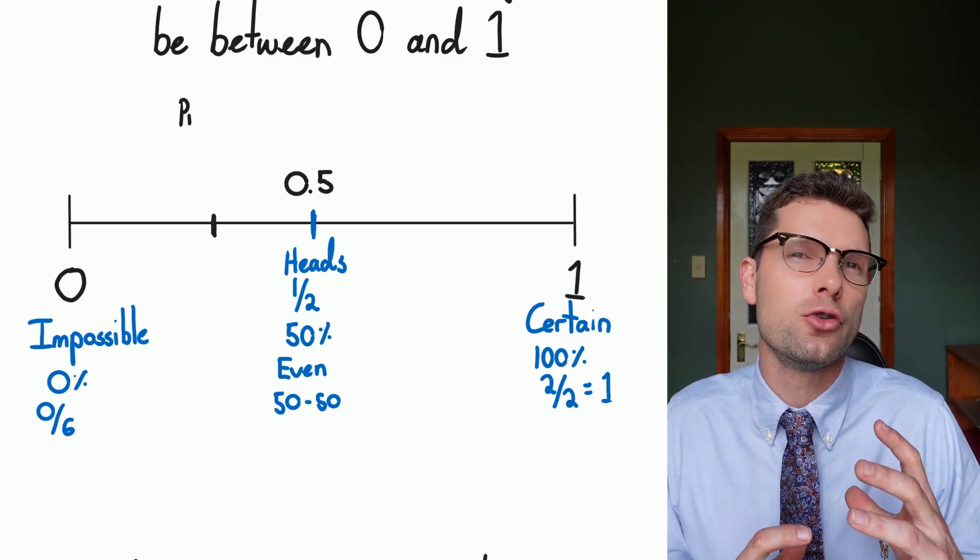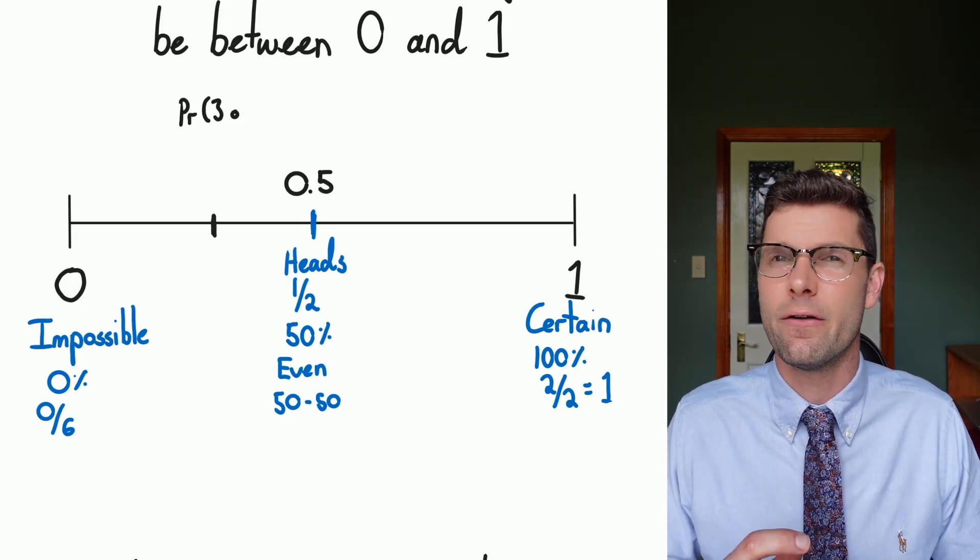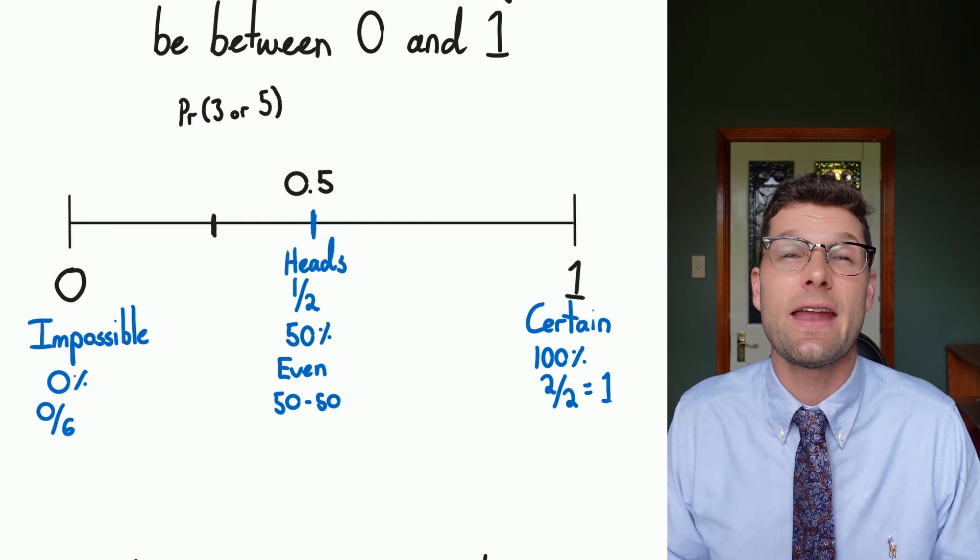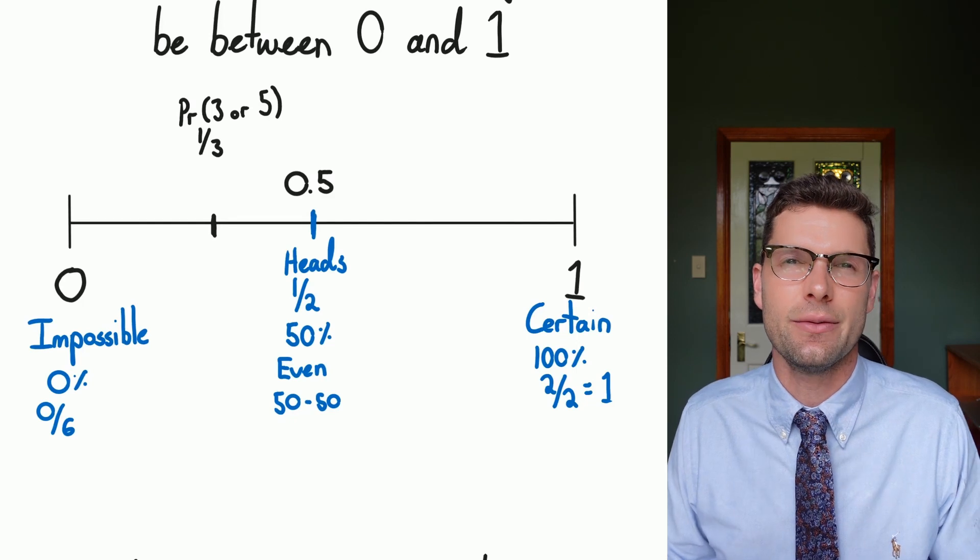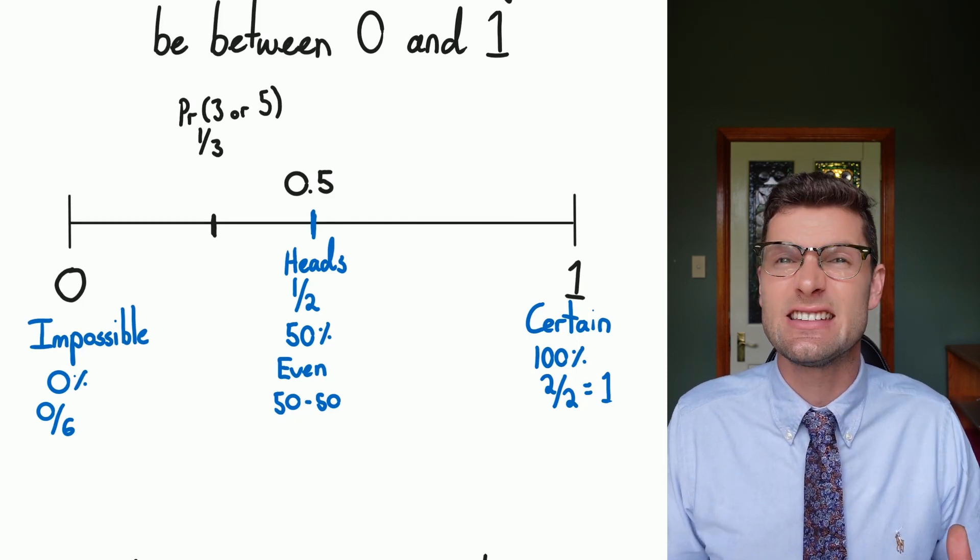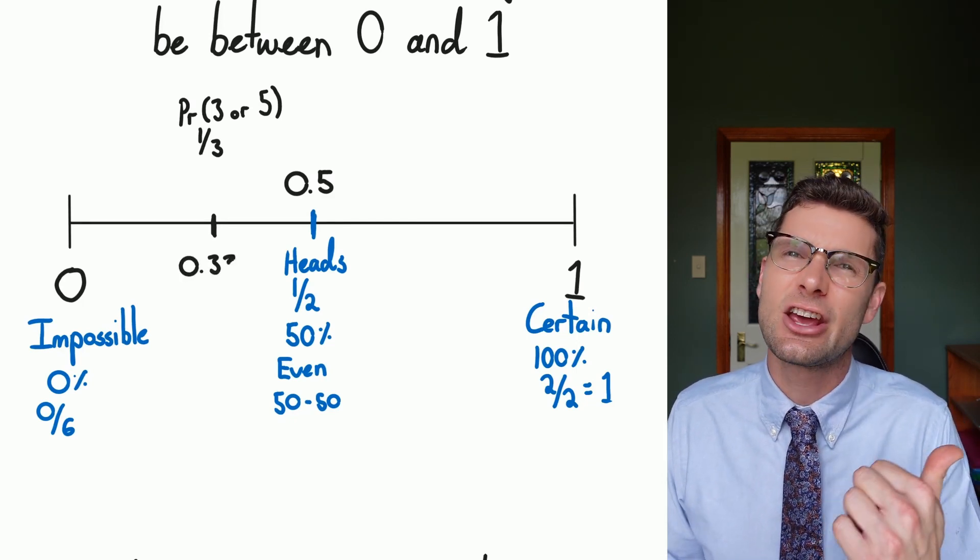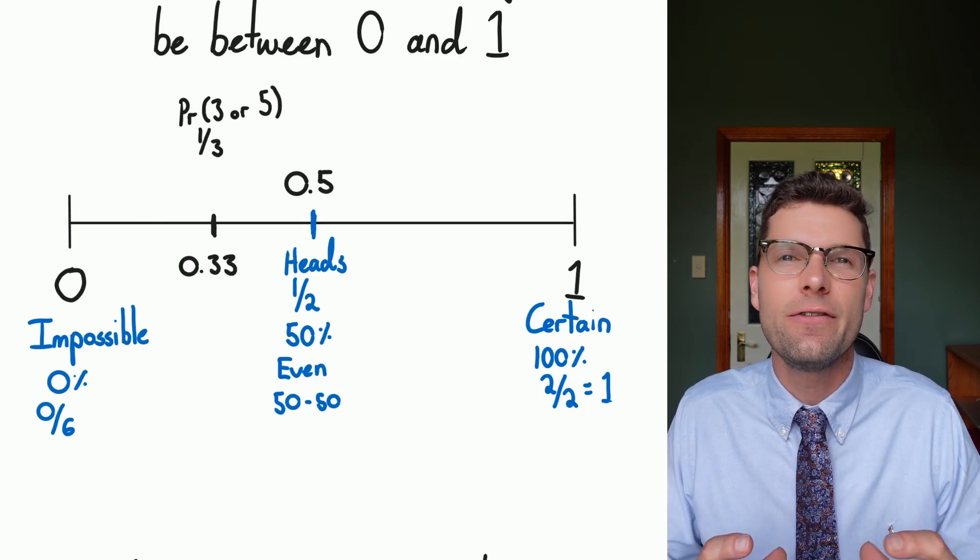So again, if we went back to that example, where you've got the probability of rolling a three or a five got you the win, we said that that would occur one out of three times. So the fraction there is a third. If we change this into a decimal, that's 0.33. And it's going to be on this side of the entire curve.